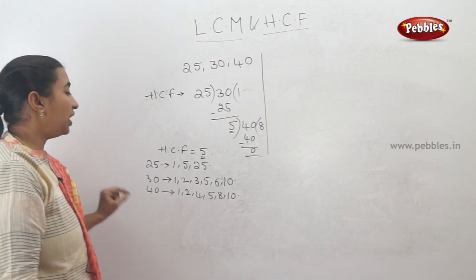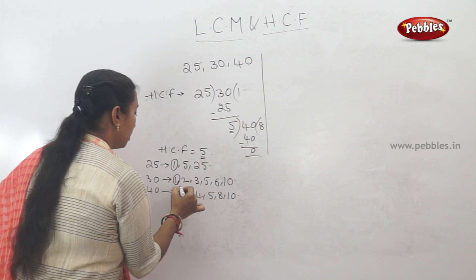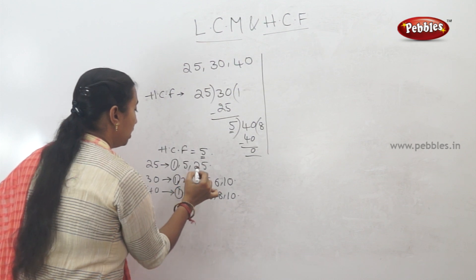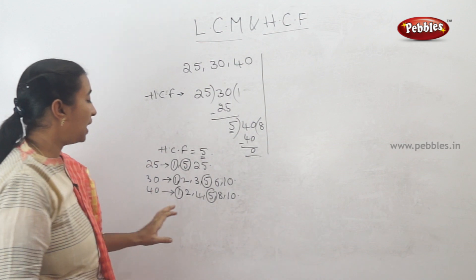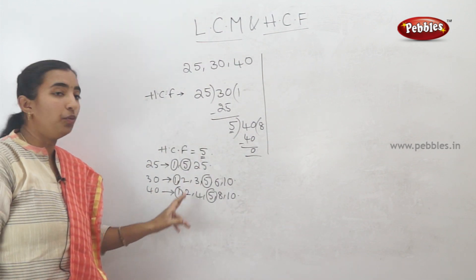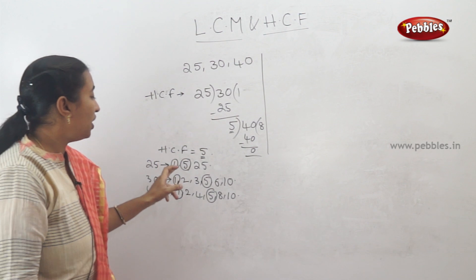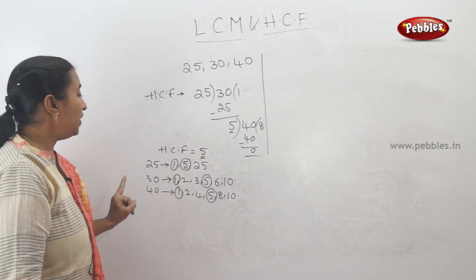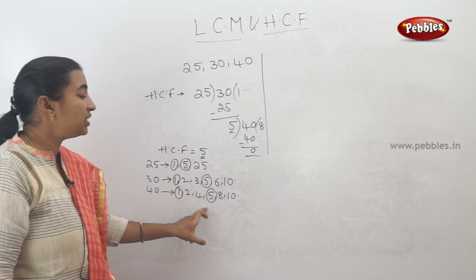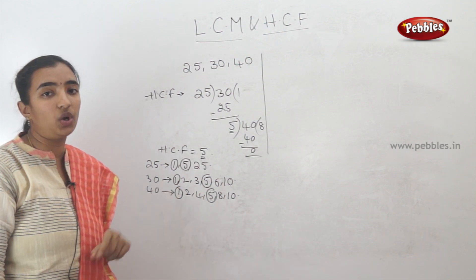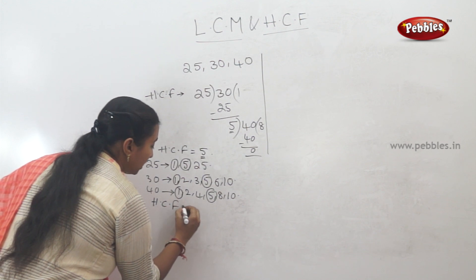Now look at what is common. The common factors are 1 and 5. HCF is the highest common factor, so 1 and 5 are the common factors, and the highest is 5. So HCF of 25, 30, and 40 is 5.